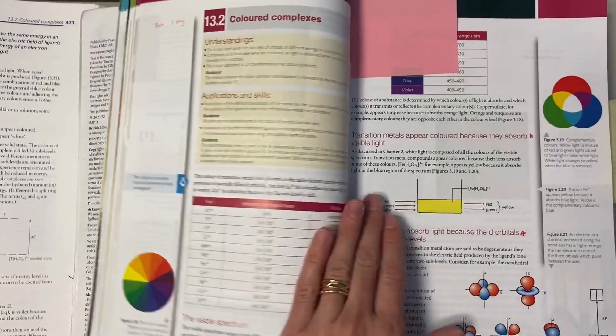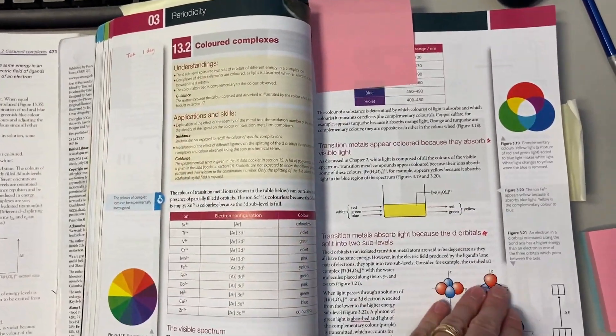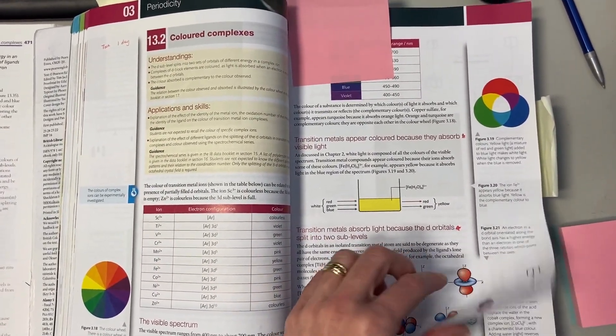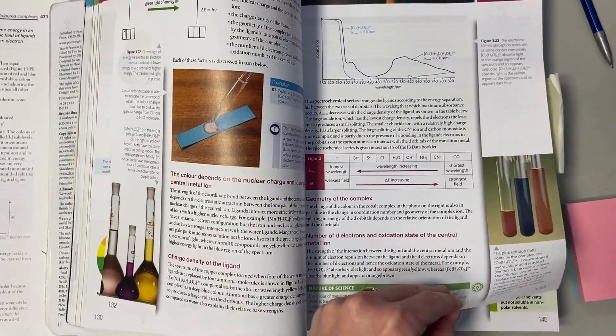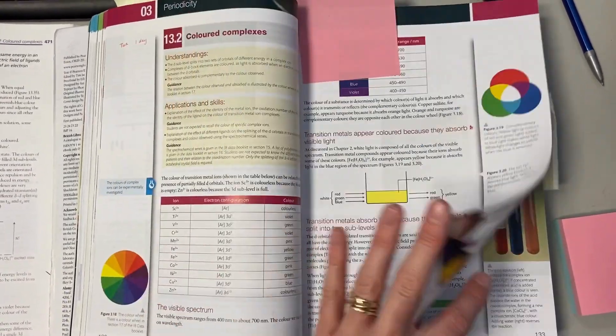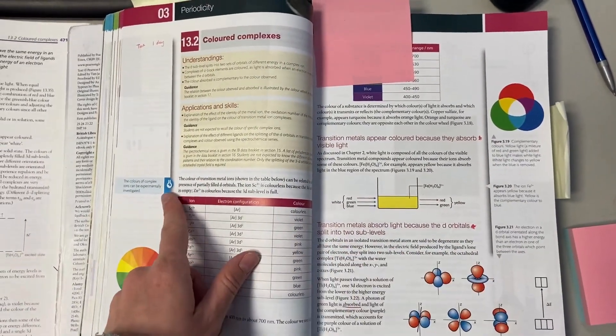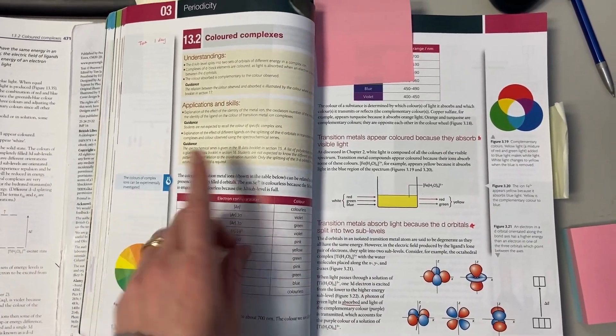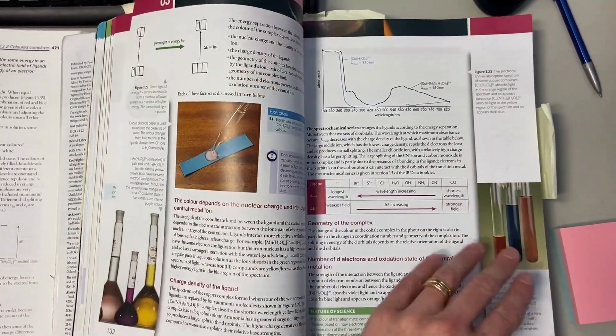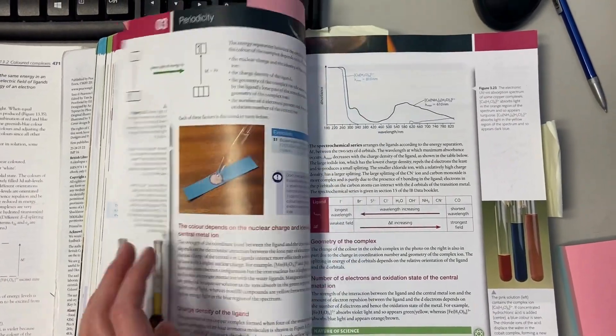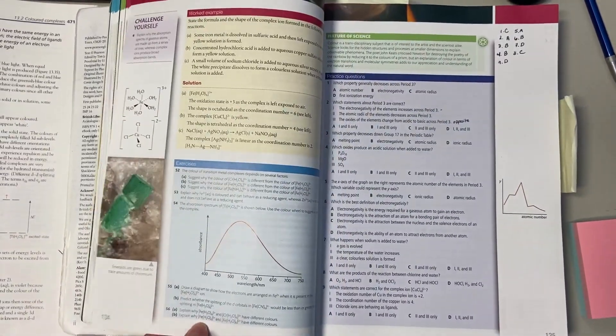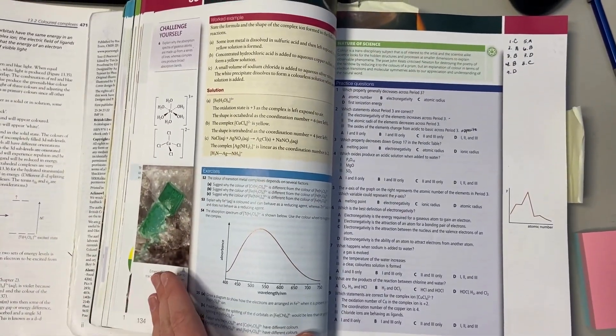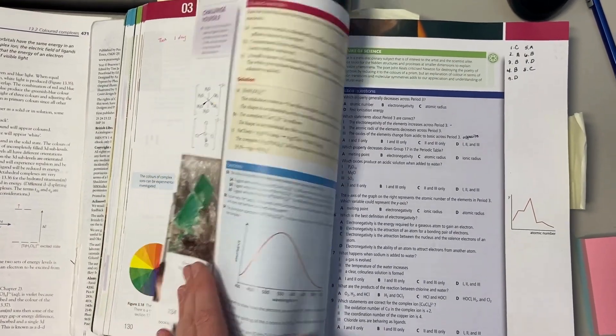And then we can look at Pearson. Pearson has dedicated a whole section to colored complexes and it does go through every single thing that you would need to know - lots of great pictures, lots of information. There is a built-in lab online that you can look at as well. Your teacher would set up the lab for you but you can see the lab worksheet online, and then tons of practice questions just with colored complexes, which again, big plus.